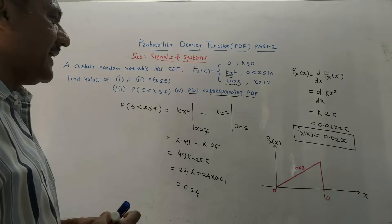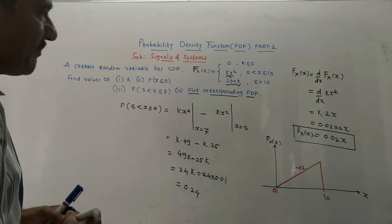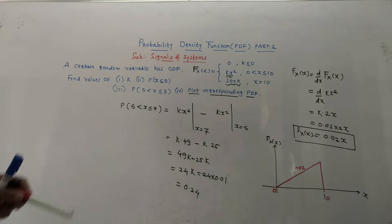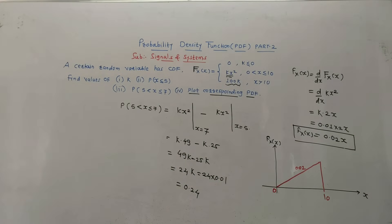The derivative of K·X² gives 2Kx. With K equal to 0.01, the PDF is 0.02x, which has a slope of 0.02. This is the final answer. We have sketched the diagram of the PDF.